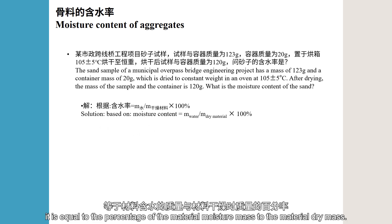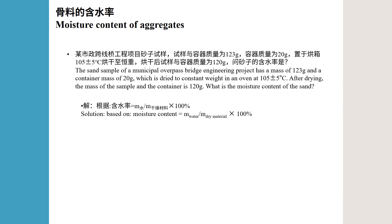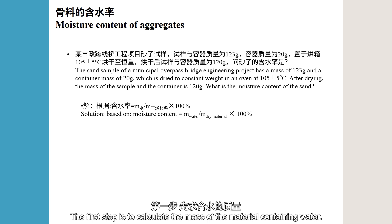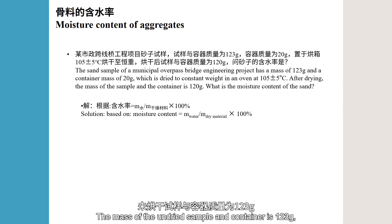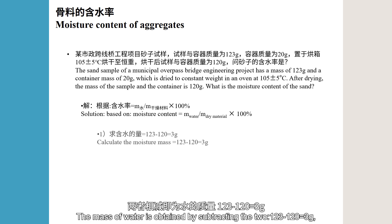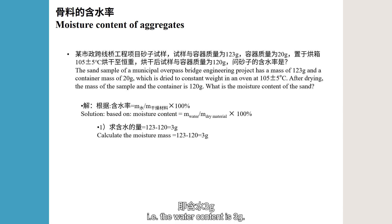According to the moisture content formula — the percentage of the material moisture mass to the material dry mass — the first step is to calculate the mass of water. The mass of the undried sample and container is 123 grams and the mass of the dried sample and container is 120 grams. The mass of water is 123 minus 120, which equals 3 grams.